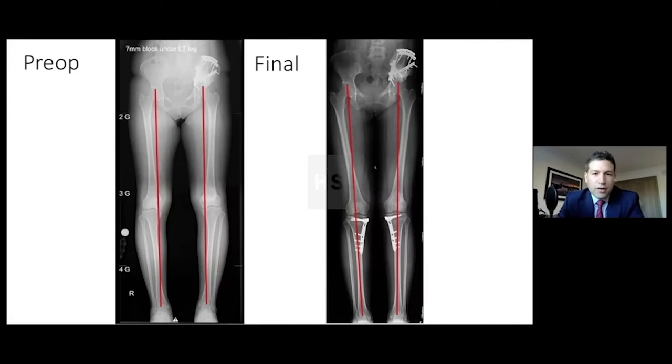That's her after both sides were done. You can see the lateral tibial spine — the red line is her new mechanical axis.